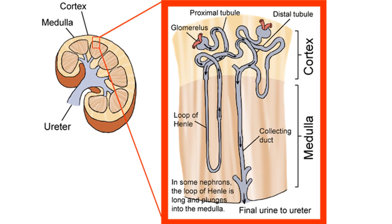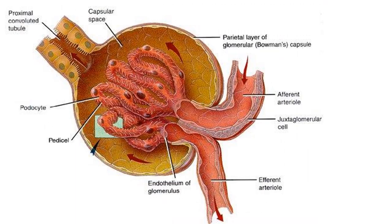Urine is produced by microscopic structures in the kidney called nephrons. The blue tube in the diagram is a kidney nephron made up of different tubules. The beginning part is the glomerulus - a spherical structure which acts as the sieve. Blood comes in through the afferent arteriole into blood capillaries, and the small stuff - ions, water, glucose, and urea - squeezes out under very high pressure to form the filtrate, which then moves through the proximal convoluted tubule.